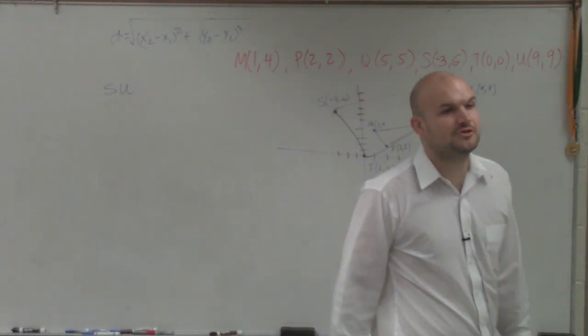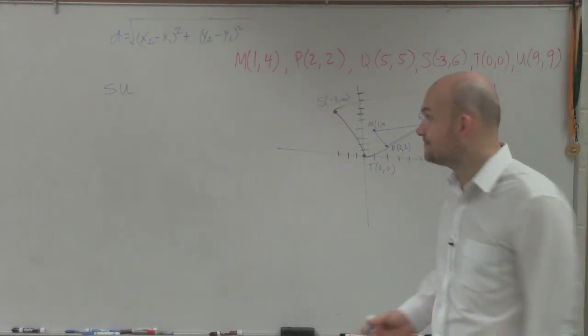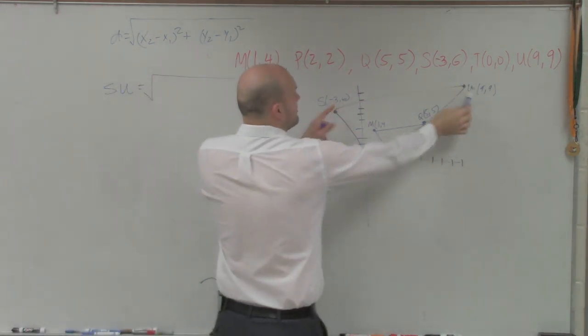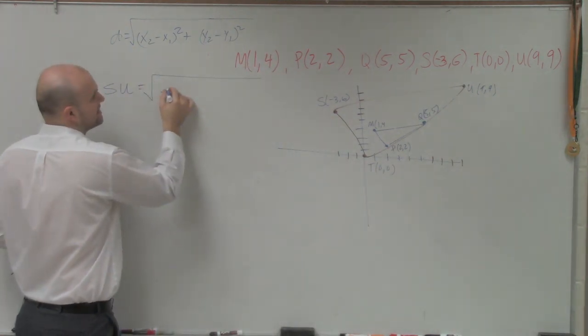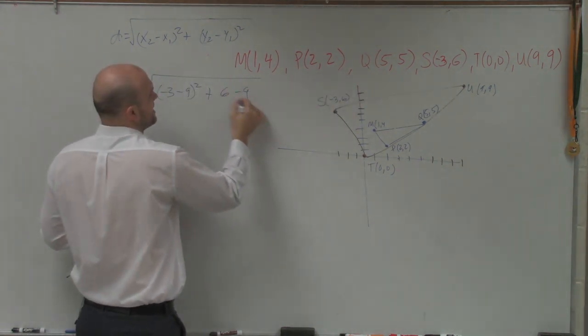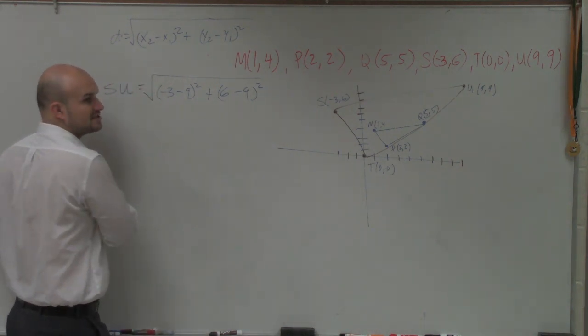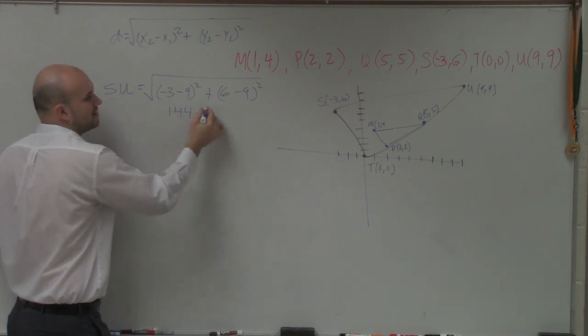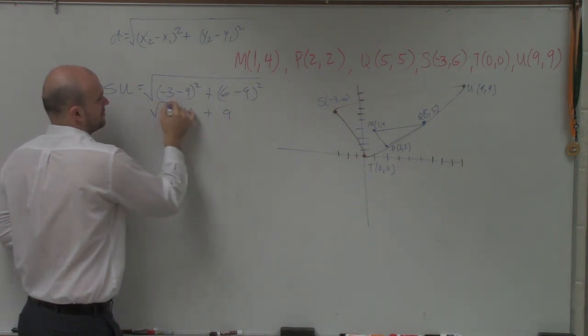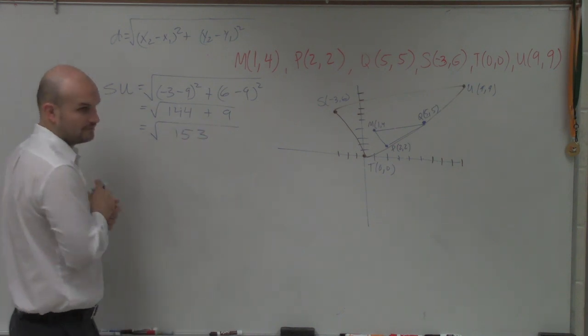Whatever points you label as x and y does not really matter. You just need to pick two points and then subtract them and then square it. So for SU, I'm just going to subtract my x coordinates. I'm going to say (-3 minus 9) squared plus, now subtract the y coordinates, (6 minus 9) squared. This is negative 3 minus 9, which is -12. That's 144 squared. Plus 6 minus 9 is going to be -3. That's going to be plus 9. So that equals the square root of 153.